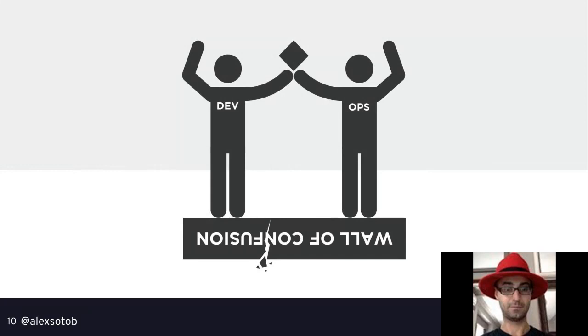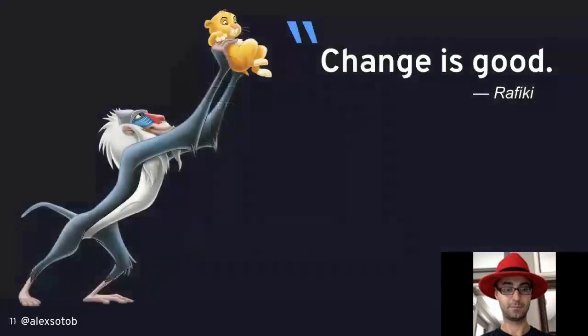We need to break this wall of confusion. We need to work together hand in hand. If the operations team spends all weekend trying to deploy a new service to production, developers should be there as well. This means changing the definition of 'done.' From the developer point of view, something is done when you close the issue on the issue tracker - when it's tested, it works, and the change is merged to master. But in DevOps, something is done when it's deployed and released to production.